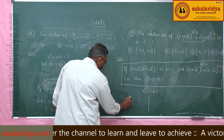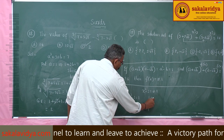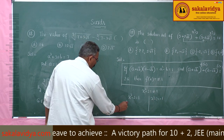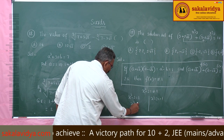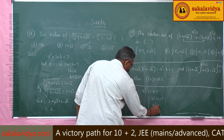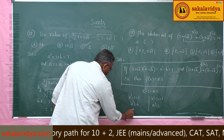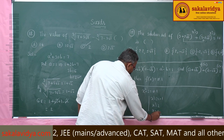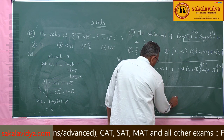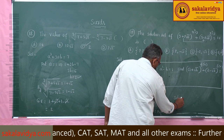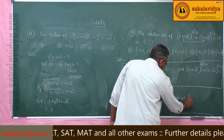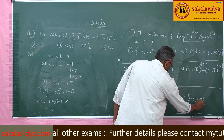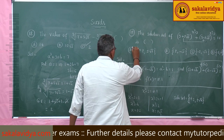Taking x² - 3 = 1 gives x² = 4, so x = ±2. Taking x² - 3 = -1 gives x² = 2, so x = ±√2. Therefore, the solution set is {±2, ±√2}, and the first option is the right option.